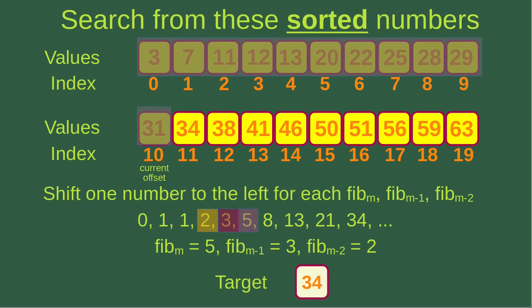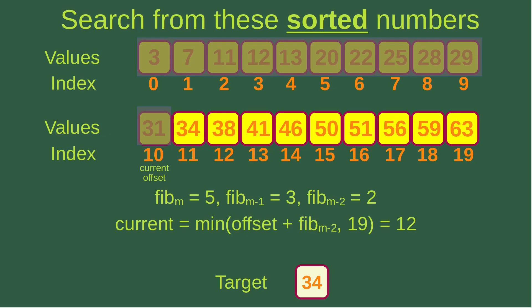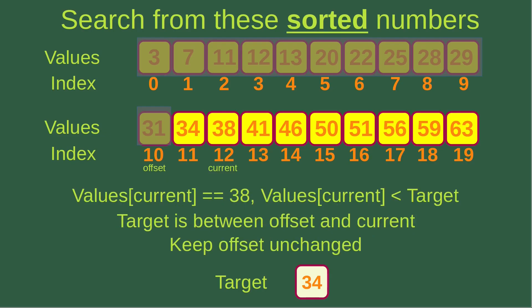I shift one number to the left for each Fibonacci number. So Fibonacci M is 5, Fibonacci M-1 is 3, and Fibonacci M-2 is 2. Offset is 10 and Fibonacci M-2 is 2, so the sum is 12. Comparing 12 and 19 gives the smaller value 12, so the current index becomes 12. The current index gives me a value of 38, which is larger than the target 34, so the target is between the offset and current indices. I keep the offset unchanged.